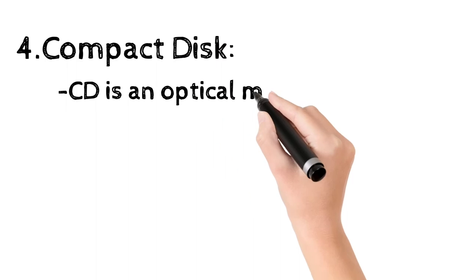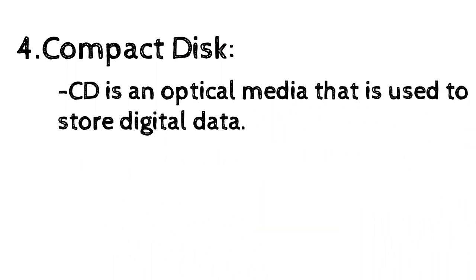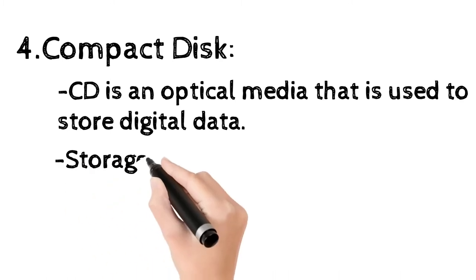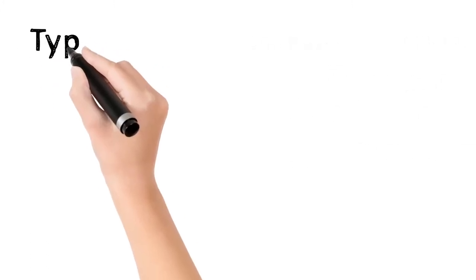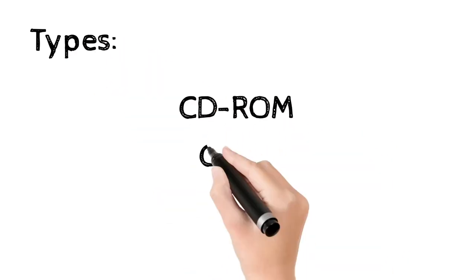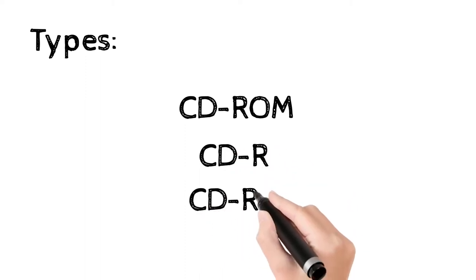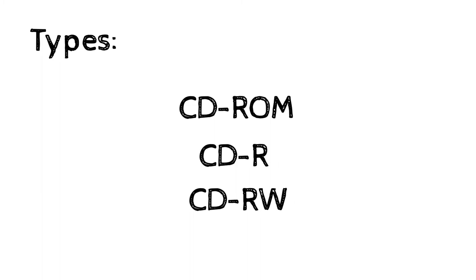Compact disc is an optical media used to store digital data. CDs are relatively cheap storage devices, and the most common storage capacity of a CD is 700 MB. Compact discs are categorized into three main types: CD-ROM (compact disc read-only memory), CD-R (compact disc recordable), and CD-RW (compact disc rewritable).